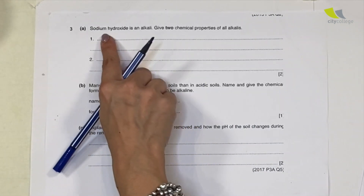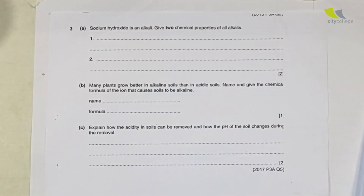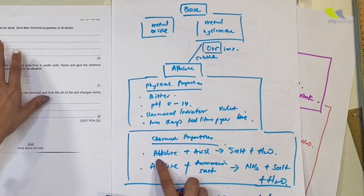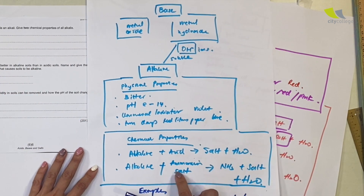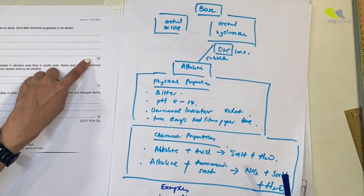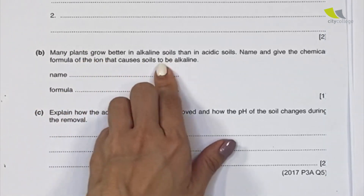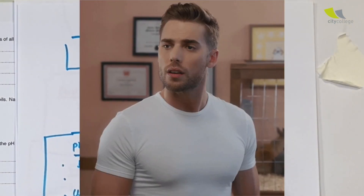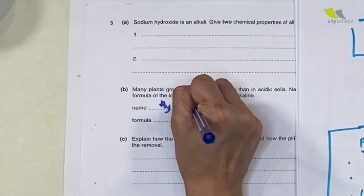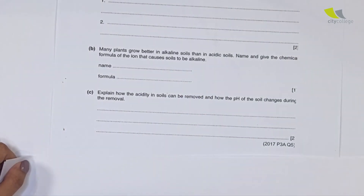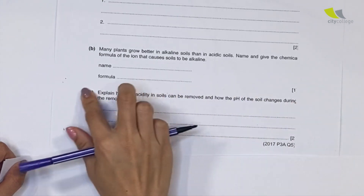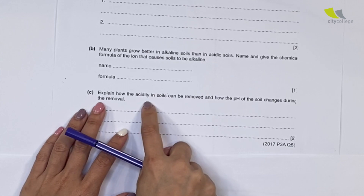From the 2017 paper: 'Sodium hydroxide is an alkali — give two chemical properties of alkalis.' Simply state: alkali reacts with acid to give salt and water; alkali reacts with ammonium salt to give ammonia gas, salt, and water. Next, the question asks what ion makes soil alkaline — the answer is the hydroxide ion, OH⁻.